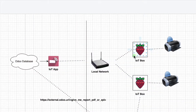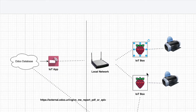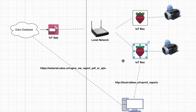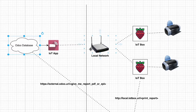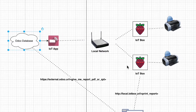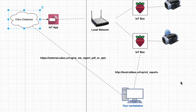Now let's discuss how printing works. Starting with the IoT box: first, as mentioned before, you will receive IoT boxes that you install in your local network, and your admin will connect printers to them. The second thing you will need to do is install the IoT application on your Odoo database. Then you will need to follow some configuration guides that you can find online on odoo.com.